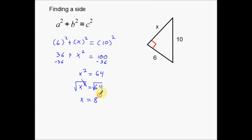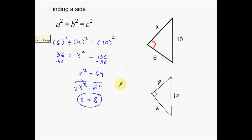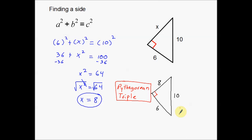This isn't a problem like last time where we had to simplify the radical. We got a whole number for our leg, so this side is just 8. Now I'm going to redraw this triangle to go over a vocab word. A Pythagorean triple is simply a right triangle that has whole numbers for all three of its sides. Notice this triangle has sides 6, 8, and 10 — everything's a whole number, no decimals or fractions. That's what we call a Pythagorean triple.